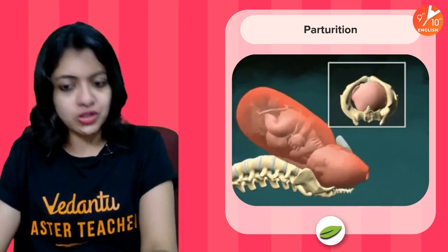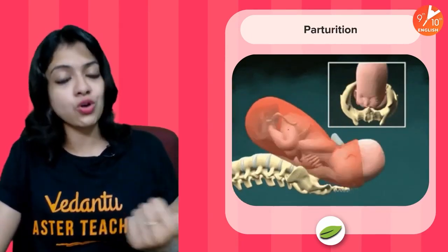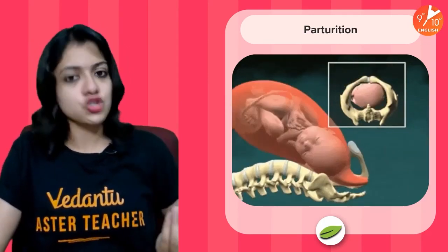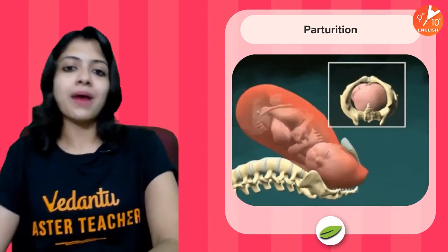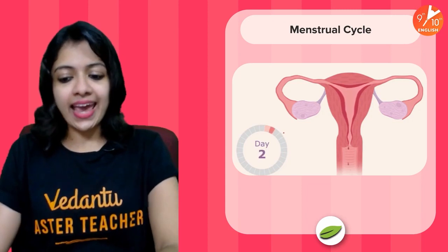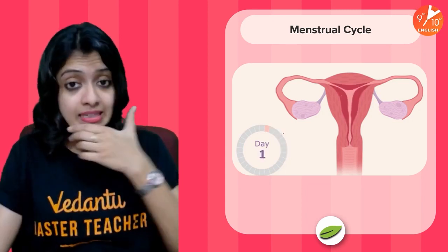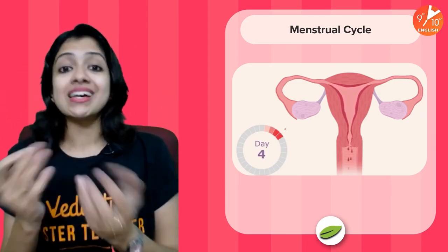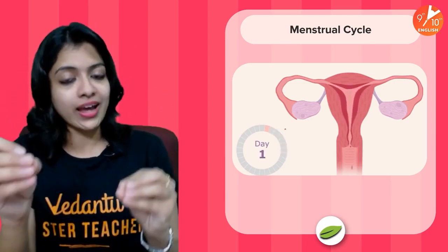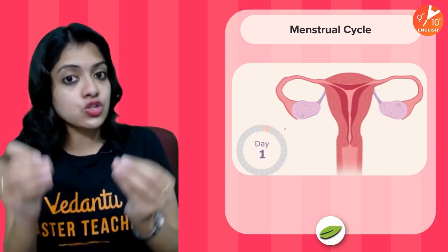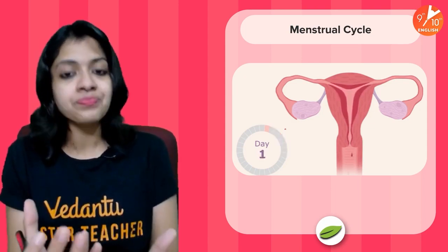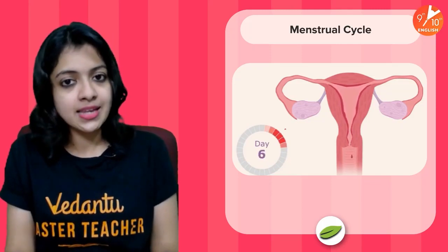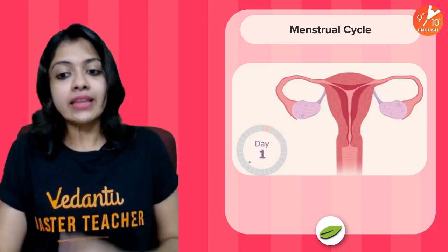Now about parturition. At the end of gestation, the baby is delivered. We call the process of childbirth by its technical name, parturition. It's usually the head that comes out first followed by the rest of the body. Just in case in a particular month the ovum does not get fertilized — remember, fertilization only occurs if ovulation and sperm release happen around the same time — the unfertilized ovum does not become implanted.